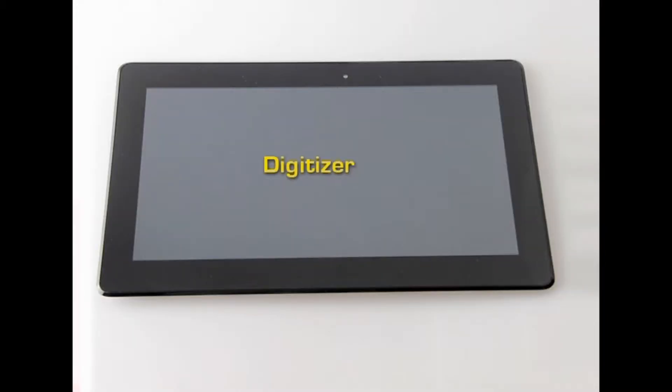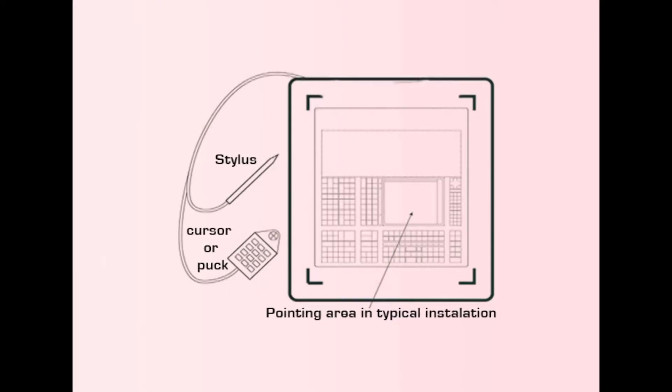The digitizer is an electronic input device that makes all AutoCAD features more accessible and greatly enhances productivity. An additional benefit is the ability to input existing patterns and illustrations. The printing device attached to the digitizer is called a cursor or puck and it can be purchased with 4, 8, 12 or 16 buttons. A stylus can also be used with the digitizer. Digitizers are available in different sizes — the 12×12 inches and 12×17 inches tablets are considered working digitizers. They are also useful for inputting patterns and illustrations.